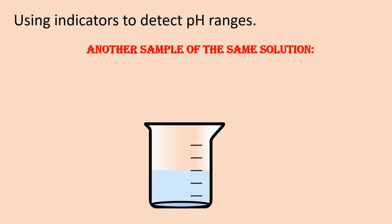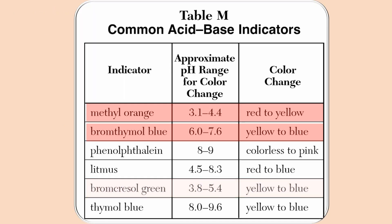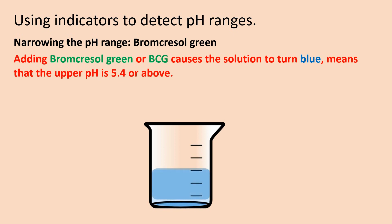Now for another sample of the same solution. As previously determined, the pH range of the original solution was 4.4 to 6.0. Now let's narrow the pH range using a different indicator, bromcresol green. Bromcresol green has a pH range from 3.8 to 5.4, going from the colors yellow to blue. This means that at a pH of 3.8 and below, the solution will be yellow, and at a pH of 5.4 and above, the solution will be blue. Adding bromcresol green or BCG causes the solution to turn blue, which means that the pH is 5.4 or above.